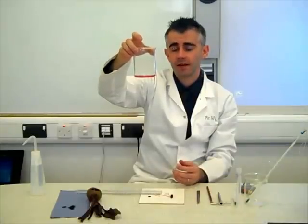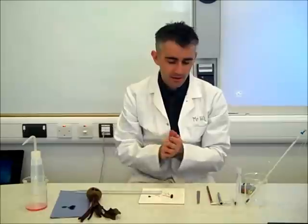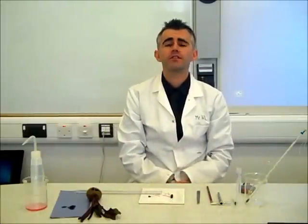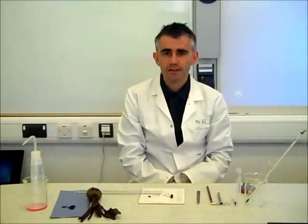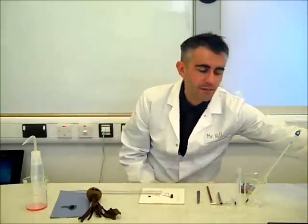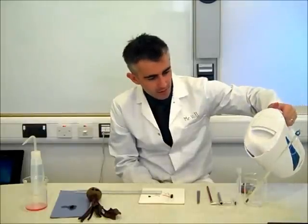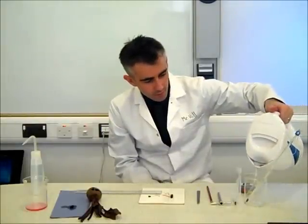Now I'm going to set up my water bath for the temperature. Ideally we'd be using electric water baths to maintain the temperature throughout the investigation. I'm going to make a water bath using a beaker, a boiling tube, and a thermometer. I've got some hot water and I'm aiming for a temperature of 50 degrees Celsius. This kettle has been boiled for a couple of minutes, so let's see what temperature we get.